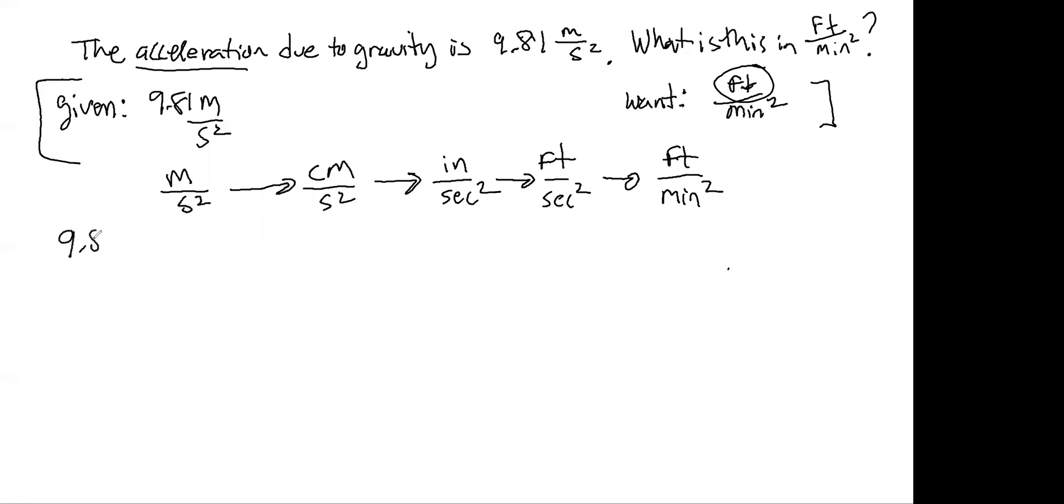So 9.81 meters per second squared. And I want to get rid of the unit of meter and go to centimeter. So what am I going to use? I'm going to use the metric system. Centi, century, 100. There's 100 centimeters in one meter. So that took care of the unit of meter.